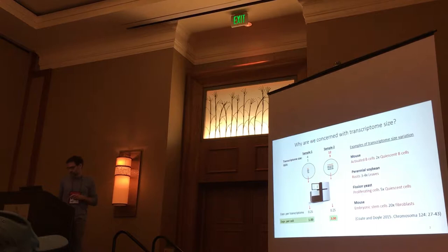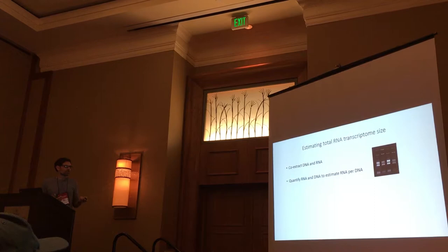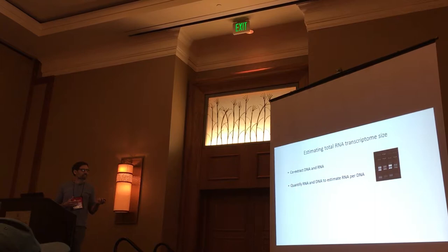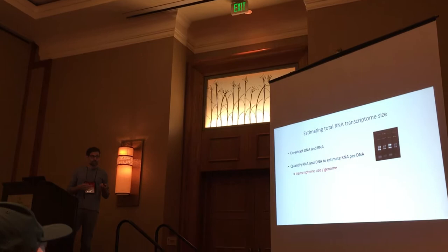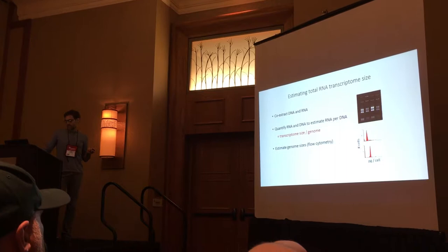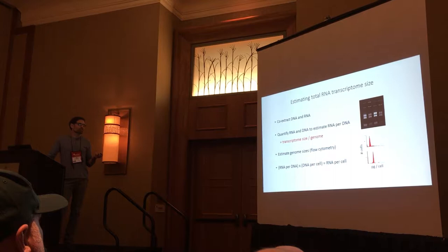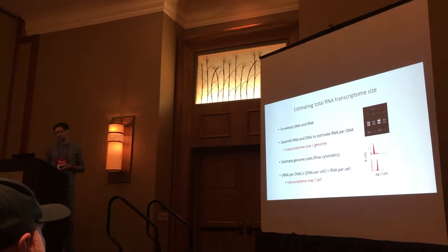To estimate total RNA transcriptome size, what we're doing is co-extracting DNA and RNA from the same tissue, quantifying yields of the two using Qubit assays to estimate an RNA-per-DNA ratio, which is in effect total RNA transcriptome size per genome. Then we're estimating genome sizes by flow cytometry to get DNA per cell, and simply multiplying RNA per unit of DNA times DNA per cell to get an estimate of RNA per cell, or transcriptome size on a per-cell basis.